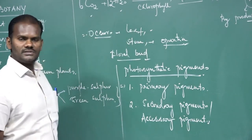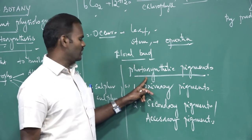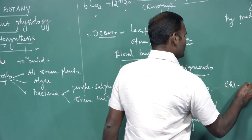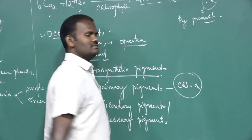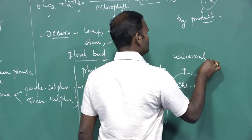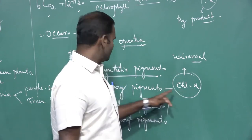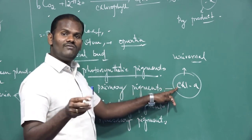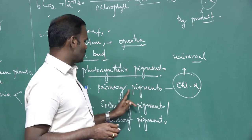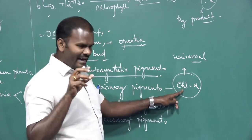The pigments involved in photosynthesis are called photosynthetic pigments. There are two groups: primary pigment and secondary pigment. What are primary pigments? Chlorophyll A is called the primary pigment. It is also called the universal pigment, because it is universally present in all green parts of plants. It is mainly involved in the absorption of solar energy for photosynthesis. Chlorophyll A is called a primary pigment because it is directly involved in photosynthesis.